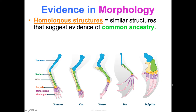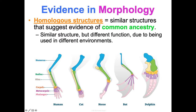One of my favorite things to look at is morphology. We look at three different types of structures to provide evidence for evolution. First are homologous structures — 'homo' means same. These are similar structures that suggest evidence of common ancestry. Similar structure, but most likely a different function, due to organisms having evolved to survive in different environments. Homologous structures are the result of divergent evolution — a common ancestor and then branching out from there.